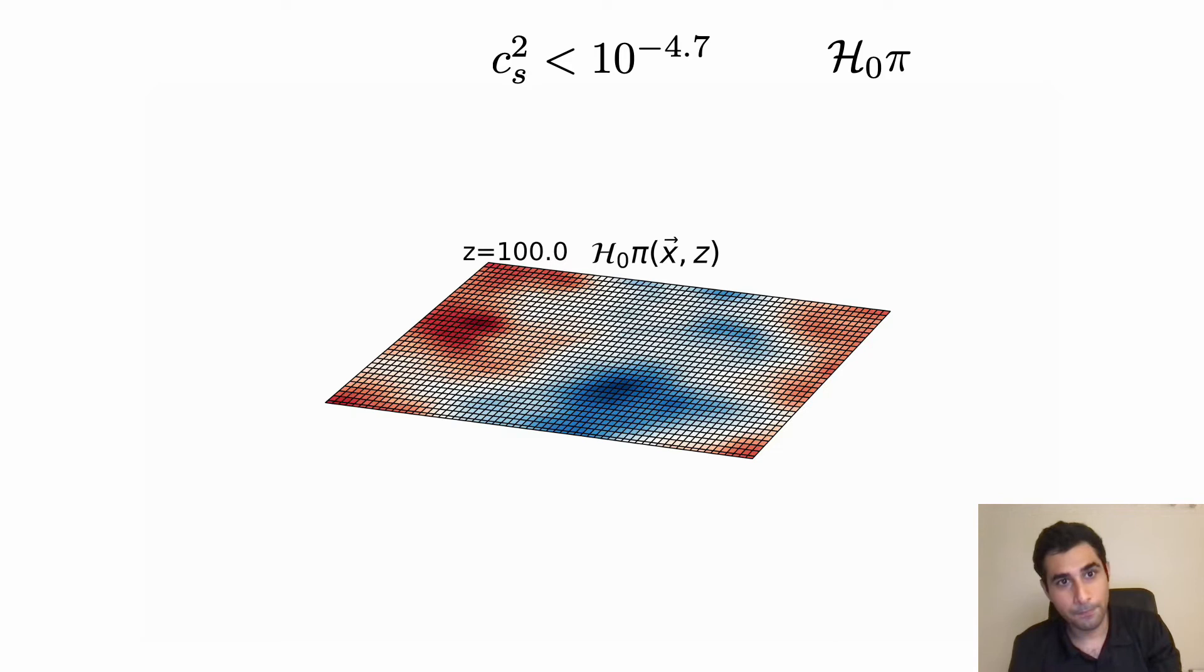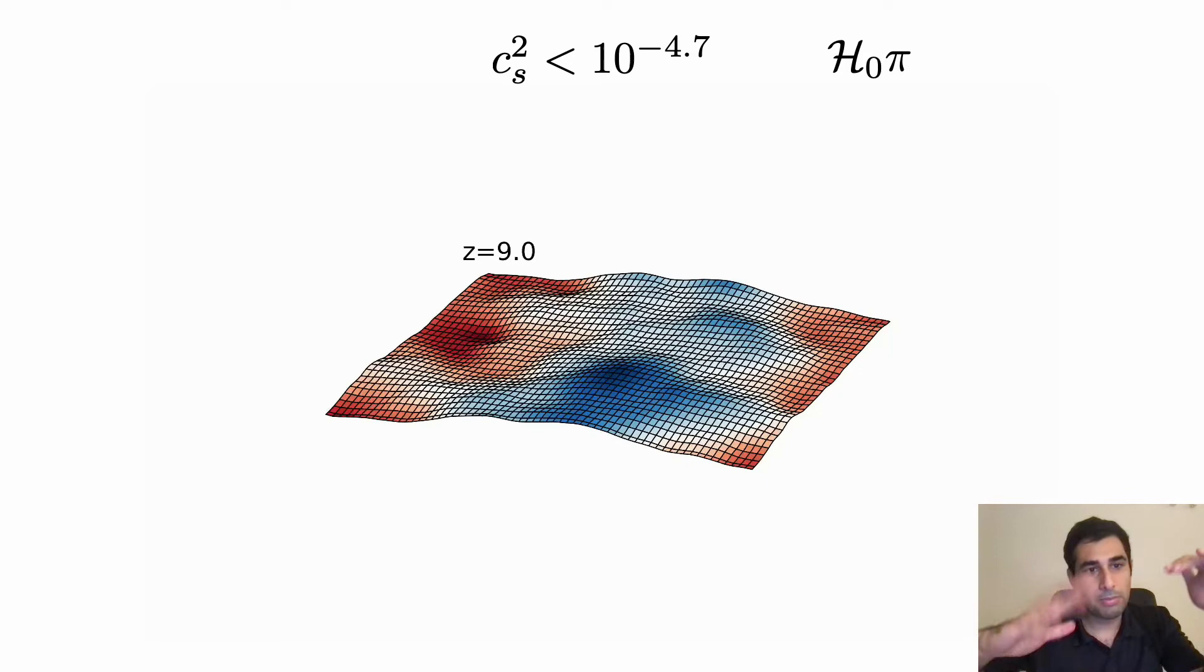Here I'm going to show an animation which is just for illustrative purposes. Here you see the scalar field solution where the colors show whether the scalar field perturbation is larger than the average or is smaller. Initially at z=200 we have a very small variation around the average. When time passes there will be some structures of k-essence but nothing special happens, so the perturbations are small.